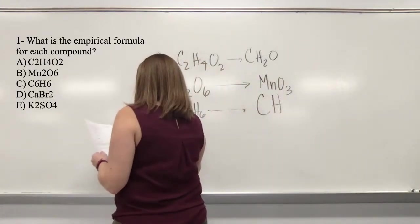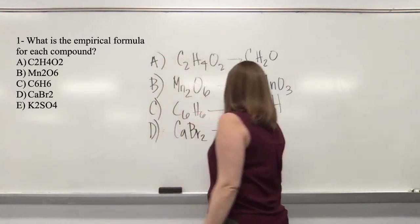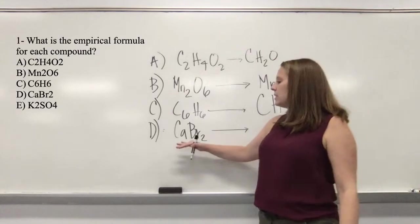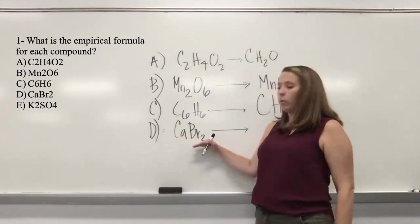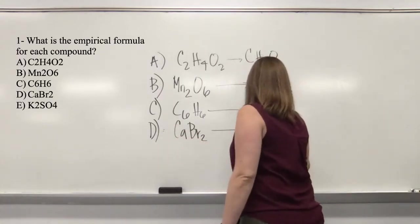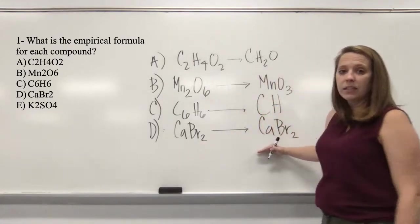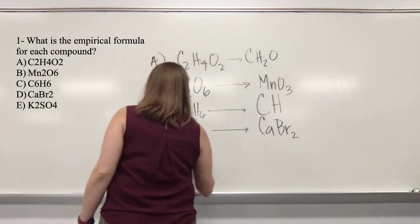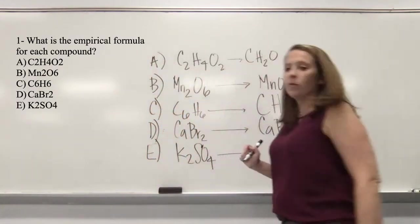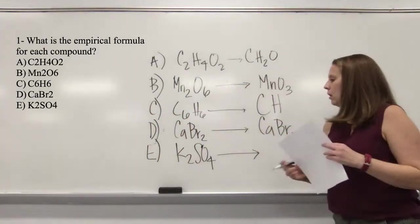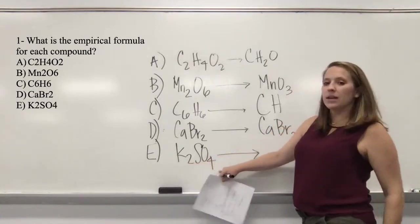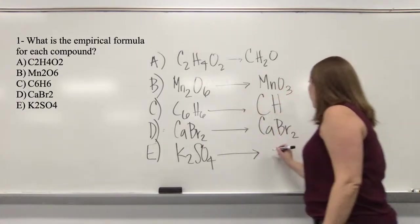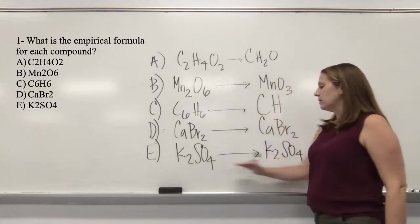For D, we have CaBr₂. Sometimes the molecular formula is the empirical formula because this is already the lowest whole number ratio — there's no way to divide Ca or Br by the same number to get anything else. On Alex, you would just rewrite it or it'll ask if this is the lowest whole number ratio. For E, K₂SO₄ — you might think you could divide by 2, except the sulfur doesn't have a 2 on it. So K₂SO₄ is, in fact, the empirical formula.